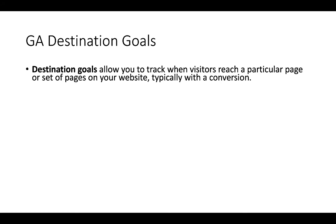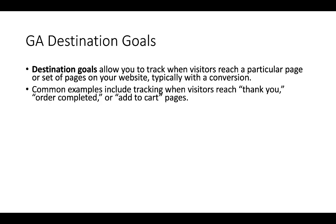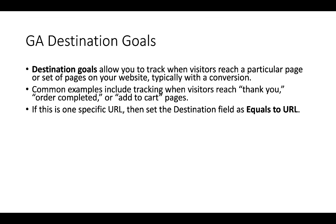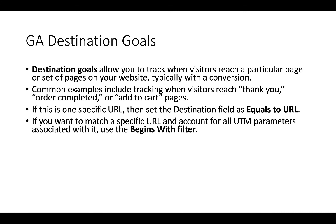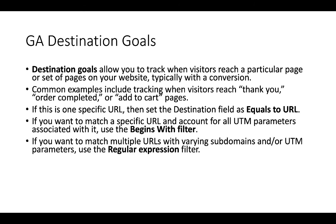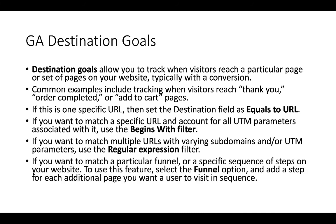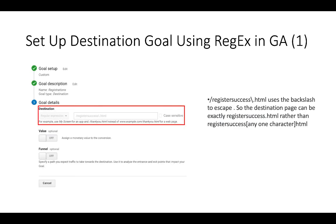Another way to use regex is to set destination goals. Destination goals allow you to check when visitors reach a particular page or set of pages on your website, typically with a conversion like a purchase. Common examples include tracking when visitors reach thank-you, order-completed, or add-to-cart pages. If there is one specific URL, set the destination field to equal to the URL. If you want to account for UTM parameters, use 'begins with'. For multiple URLs with varying subdomains or UTM parameters, use the regular expression filter.